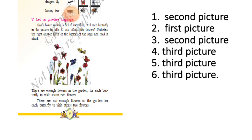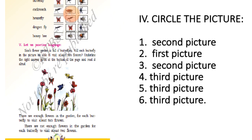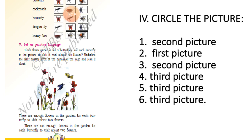Roman numeral four, page number five: circle the right picture. They have given a name and you should circle the matching picture. Mosquito is the second picture. Butterfly is the first picture, cockroach is the second picture, housefly is the third picture, honeybee is the third picture.